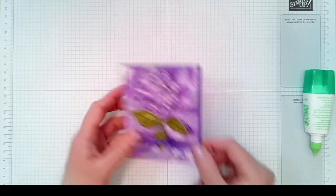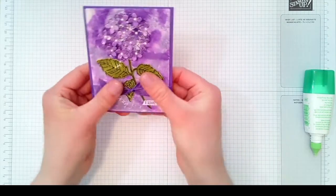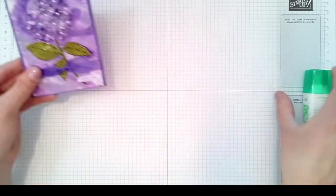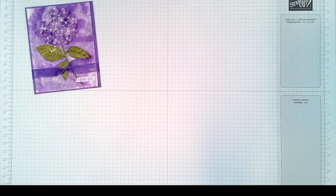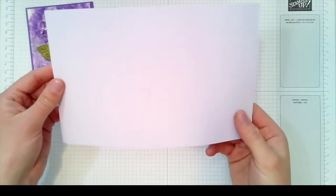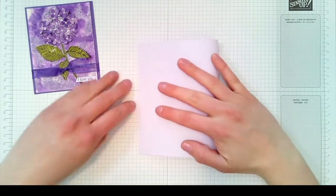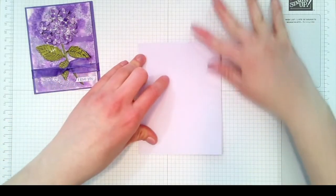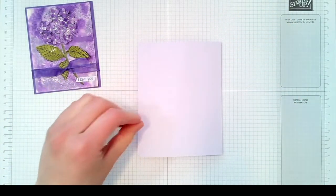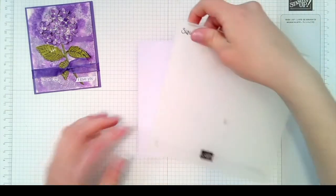Next we're going to take the purple posy base, the five and a half by eight and a half sheet of cardstock and fold that in half. Then I'm going to use the subtle embossing folder here.